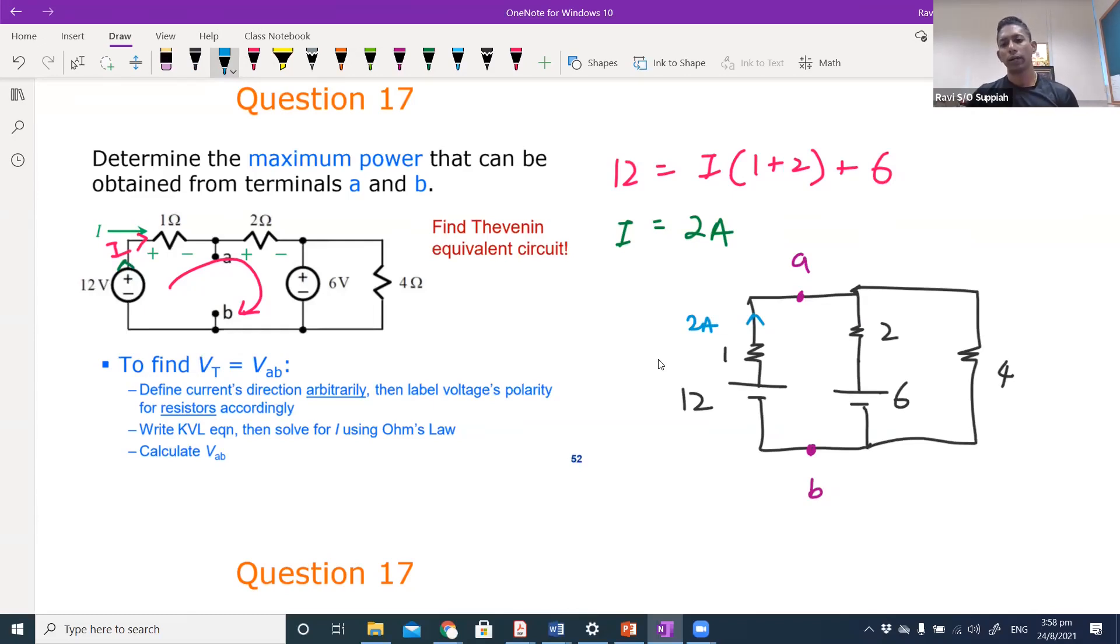The voltage drop across the 1 ohm resistor here will be in this direction, which will be 2 volts. With that, you can say that the voltage that you see here will be 12 minus 2, which will be 10 volts. That is how you can come up with the Thevenin voltage across a and b, because you already know the current and you know the voltage drop across the 1 ohm resistor here.